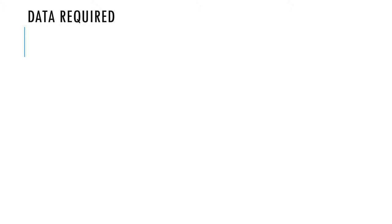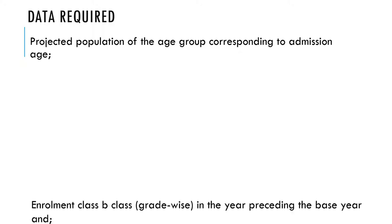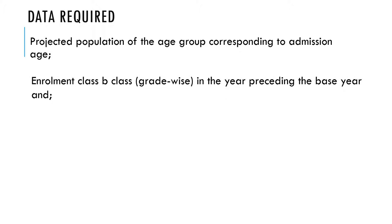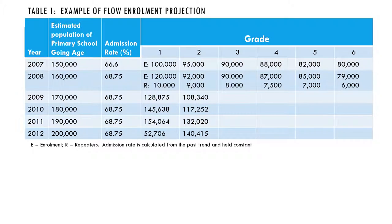Now let's look at the data that will be required when using the student flow method for projection. First, you need the projected population of the age group corresponding to the admission age. Second, you need the enrollment class by class, grade-wise, in the year preceding the base year. Third, you need the number of repeaters from the previous year by class within the base year.